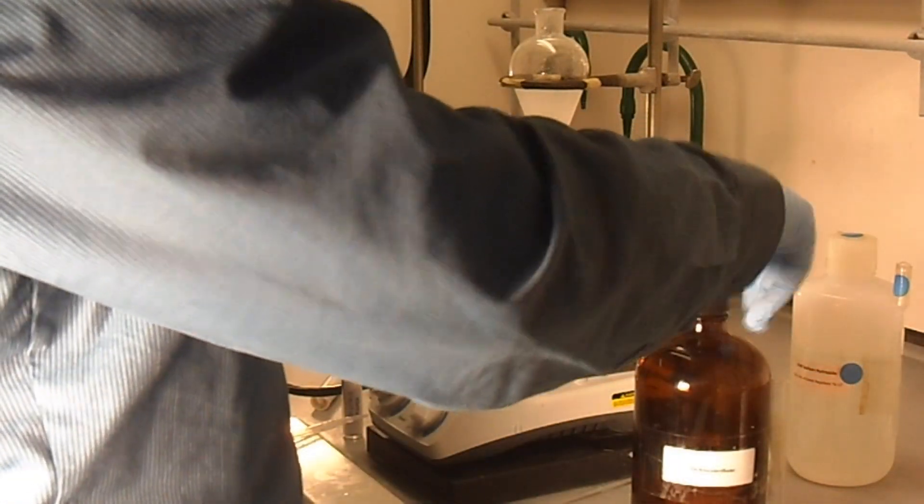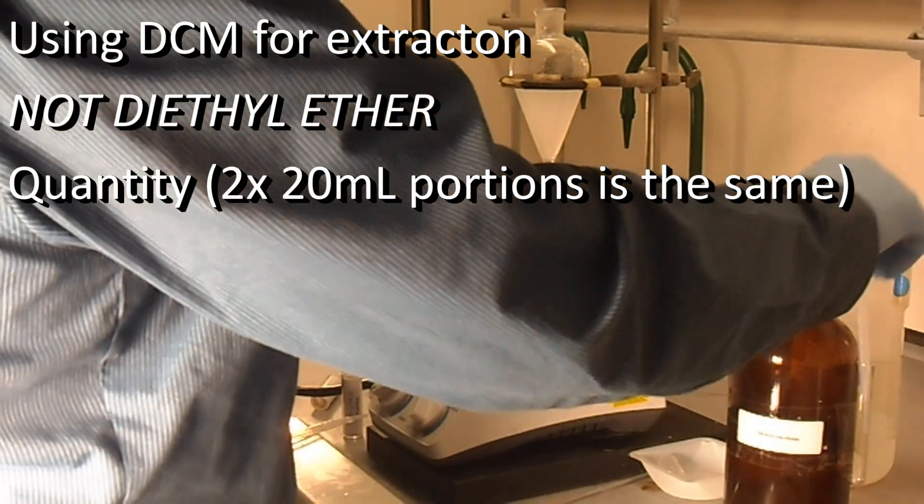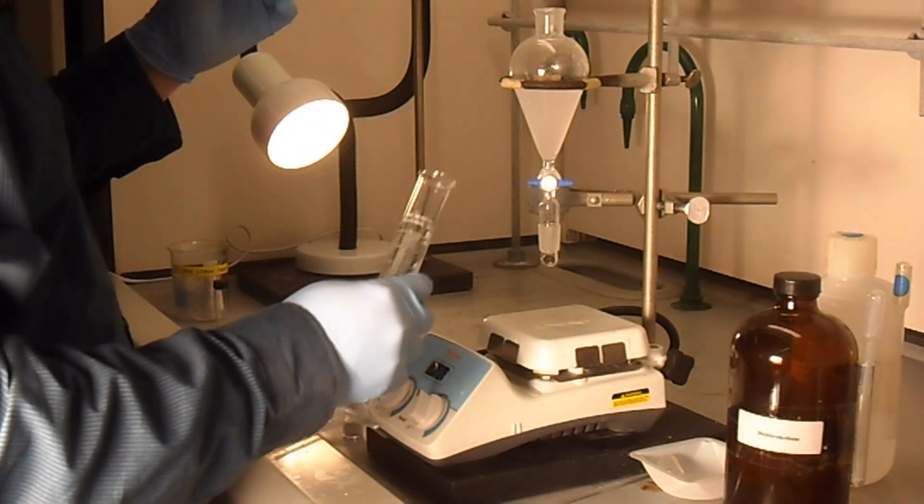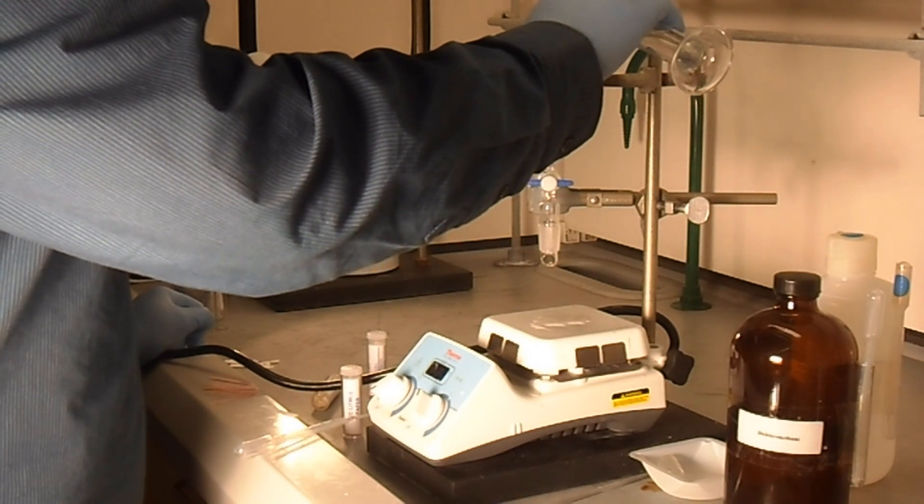So once our salt is dissolved, we're actually going to be using dichloromethane for our extraction, not diethyl ether, so we're going to put 20 milliliters of dichloromethane into our sep funnel and perform an extraction.